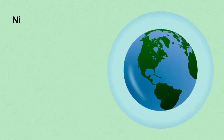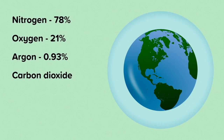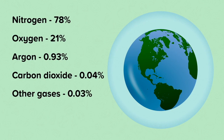The Earth's atmosphere is mostly nitrogen. There is 21% oxygen, 0.93% argon, which is a very unreactive gas, and 0.04% carbon dioxide. The remaining 0.03% is made up of very small amounts of other gases, such as water vapour, hydrogen, methane, helium and neon.